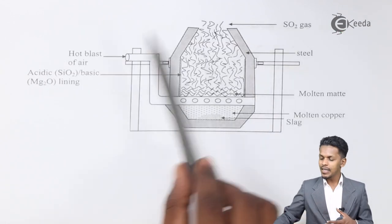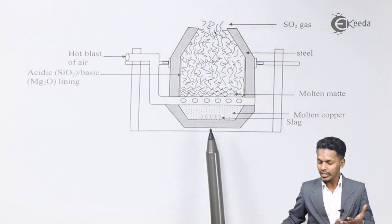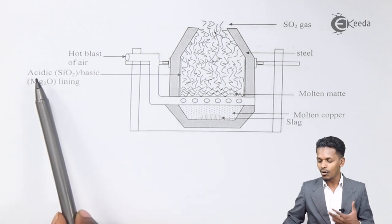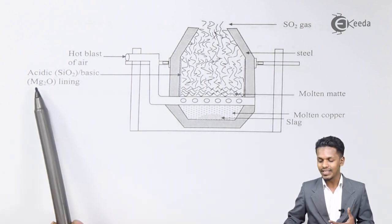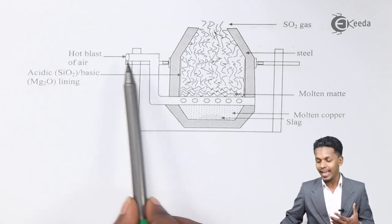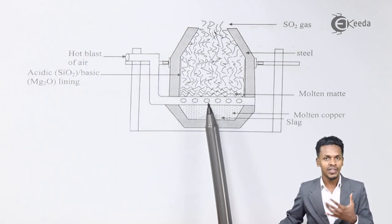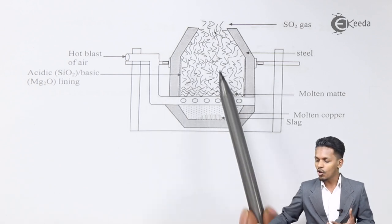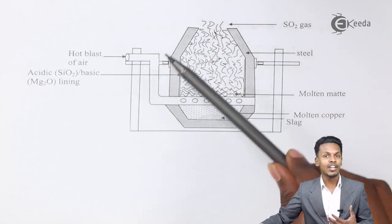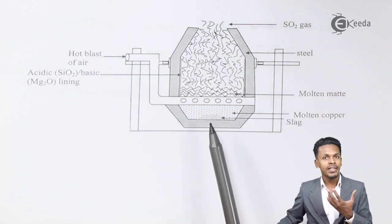The Bessemer converter is similar to a furnace, with an inner lining of acidic SiO2 and basic MgO. A hot blast of air is introduced inside, causing an oxidation reaction with Cu2S. The sulphur is converted to SO2 and is removed, allowing us to obtain copper.